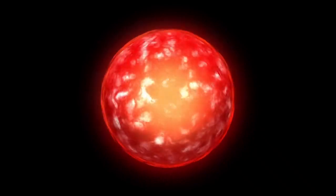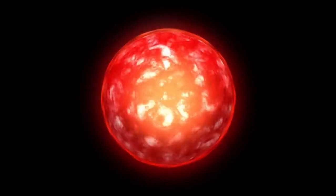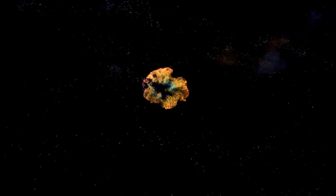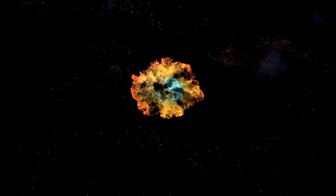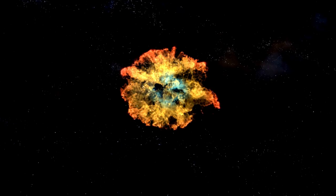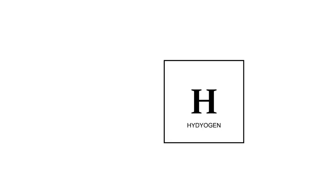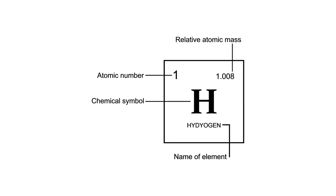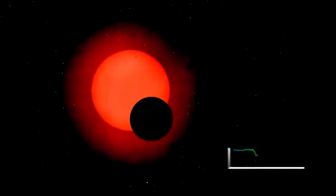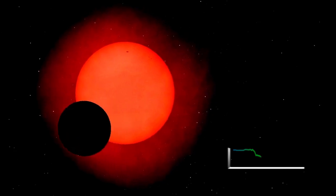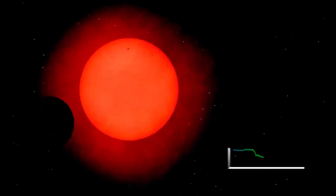In the case of Betelgeuse, a red supergiant nearing the end of its life cycle, this balance has become increasingly unstable. As the star depletes its core hydrogen fuel, the nuclear fusion processes that sustain it undergo significant changes. When hydrogen fusion slows in the core, radiation pressure decreases, causing the gravitational pull to momentarily gain the upper hand. This results in the contraction of the star's outer layers.